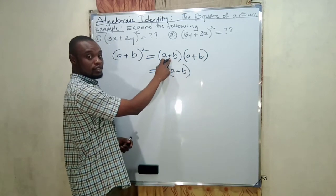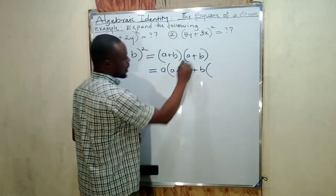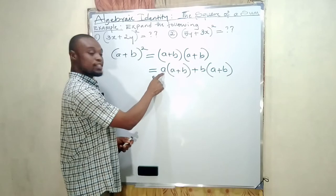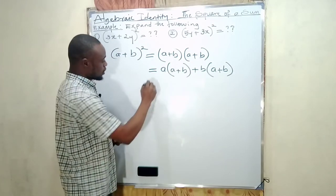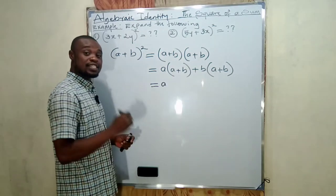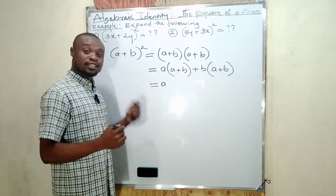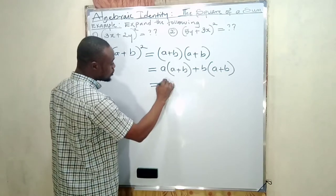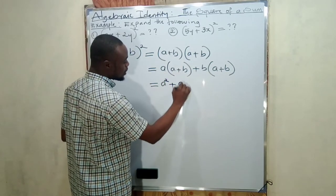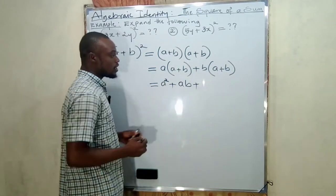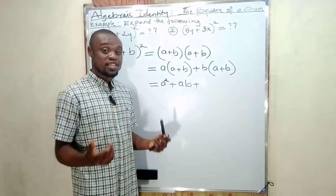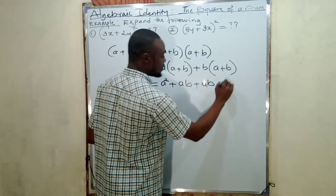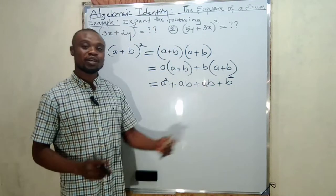Plus b multiplying (a + b), which is the second bracket. Now we multiply 'a' by everything inside the bracket. a × a = a² (from indices, a to the power one times a to the power one gives a²). Then a × b = ab. Next, b × a = ab (keeping alphabetical order), and b × b = b².